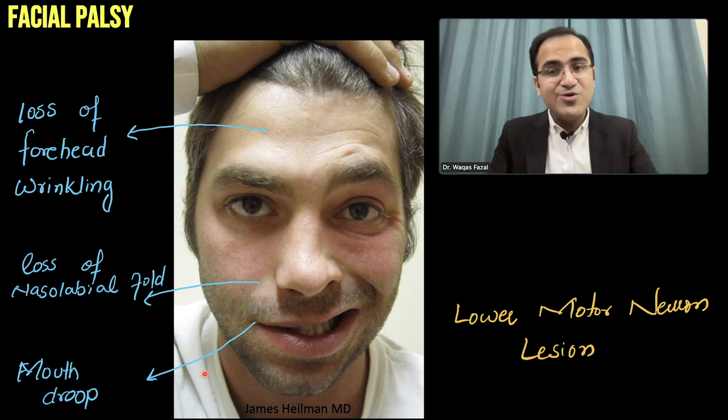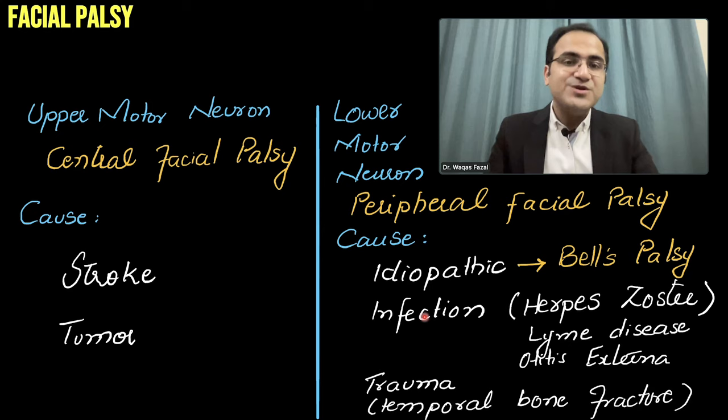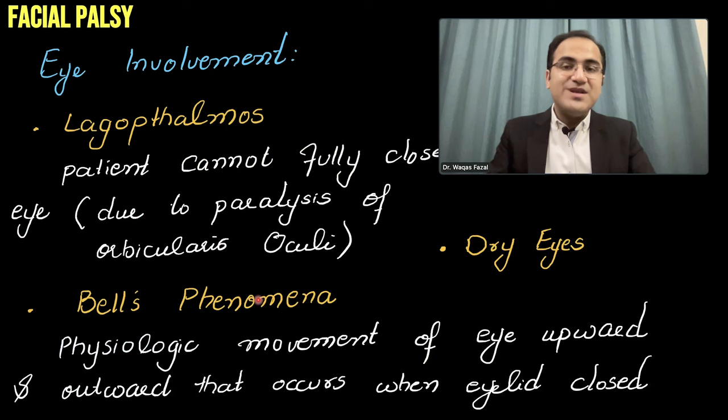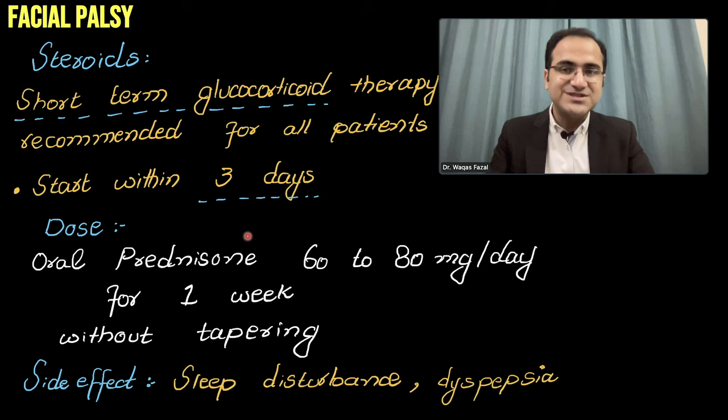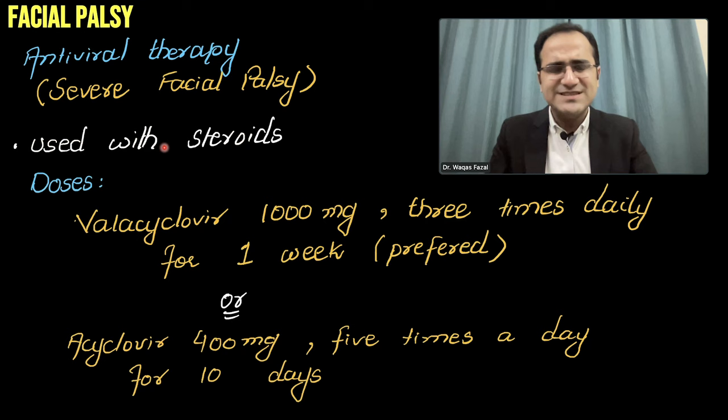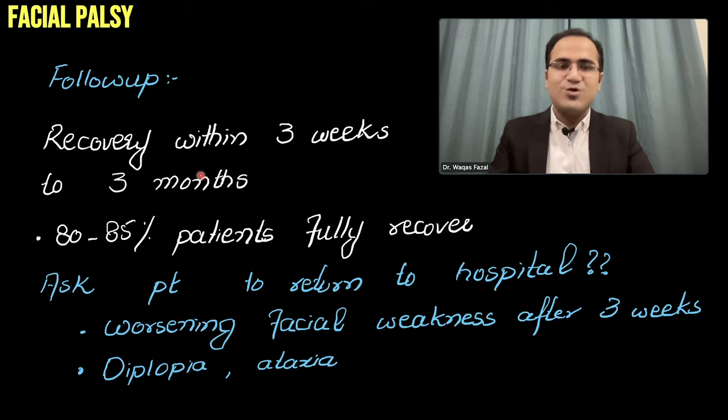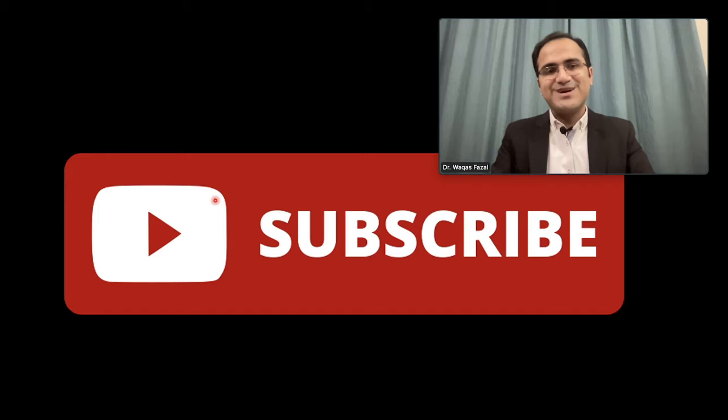In summary: we talked about what facial palsy is and the difference between upper motor and lower motor neuron lesions. We covered the causes of each type, eye involvement, Bell's phenomenon, lagophthalmos, and dry eyes. We discussed diagnosis through medical history and examination, steroids as the main treatment, antivirals in severe cases with suspected infection, eye care during day and sleep hours, follow-up, recovery timeline, and complications including synkinesia, Frey syndrome, and crocodile tears.